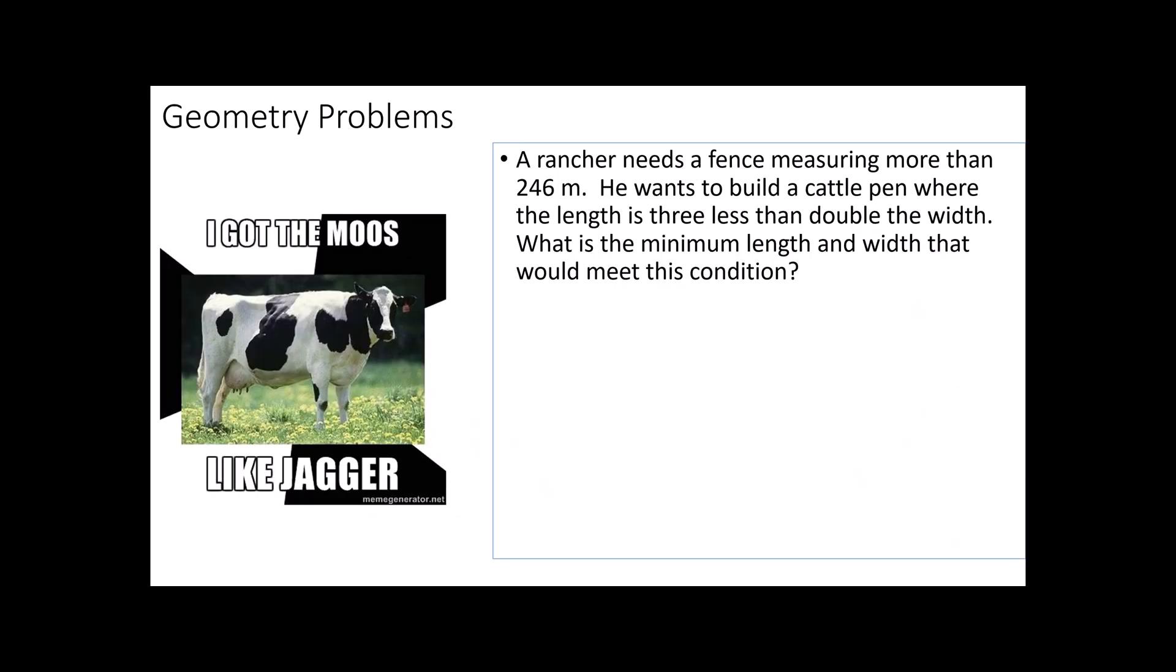Here's another one. A rancher needs a fence measuring more than 246 meters. He wants to build a cattle pen where the length is three less than double the width. What is the minimum length and width that would meet this condition? We're looking for the minimum length and width that would be more than 246. Since we're talking about length and width, I think it's fairly safe to assume he's making a rectangular field. Notice my green grass and my brown fence.